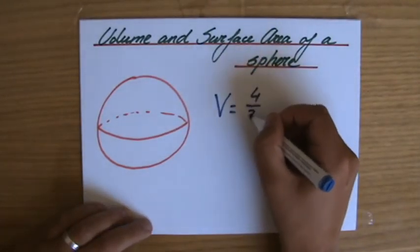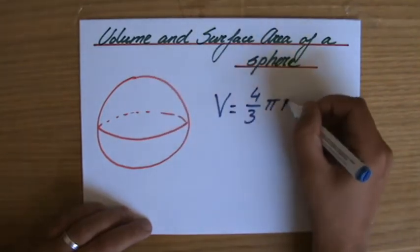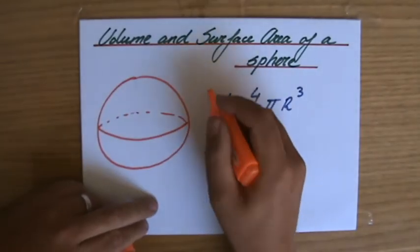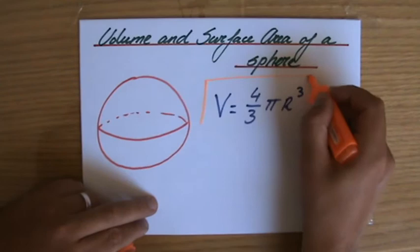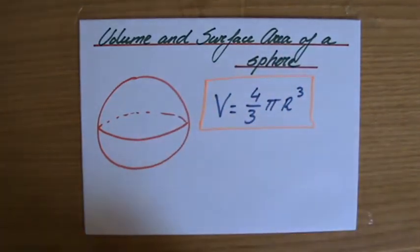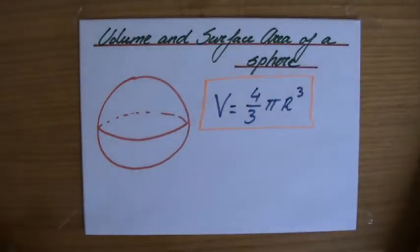So the volume equals four over three, pi, circles, r to the power three. So again, that formula will be given to you whenever they ask you a question about the volume of a sphere. Four over three times pi times the radius to the power three.